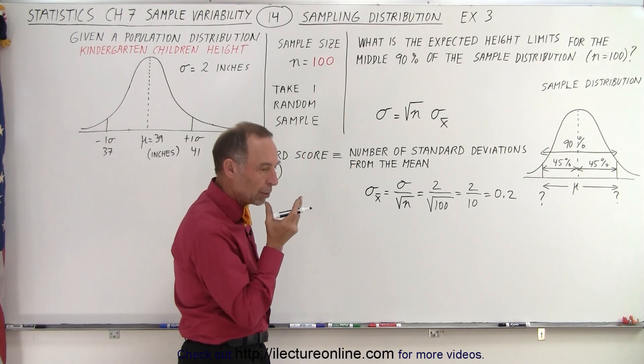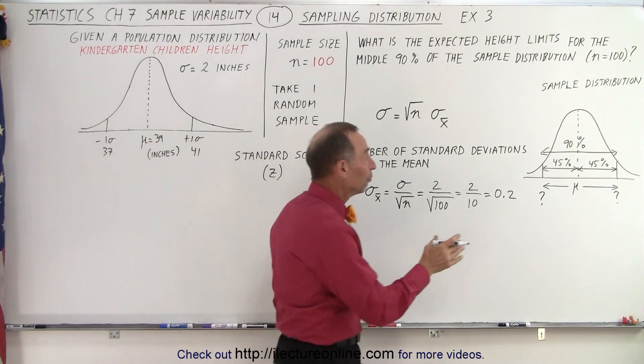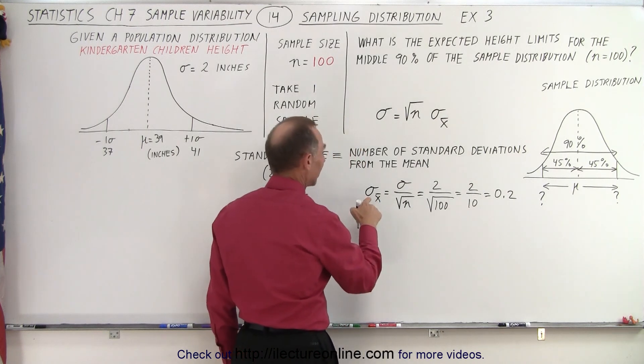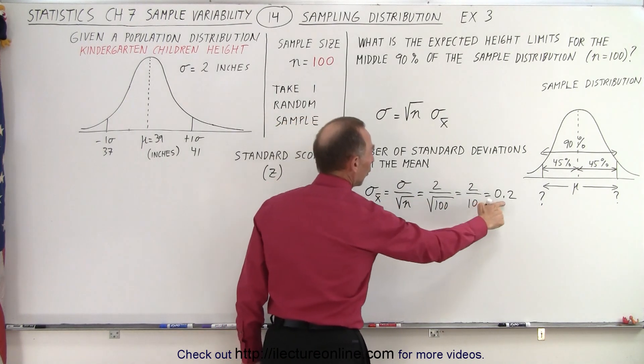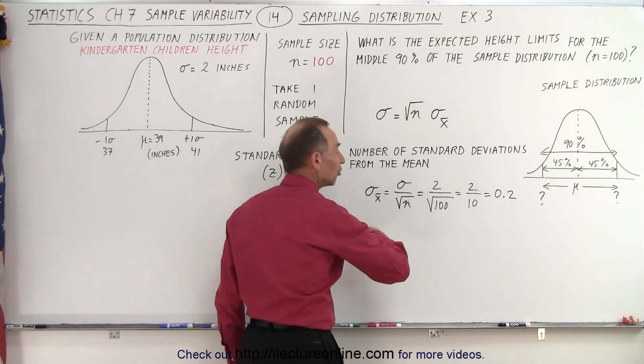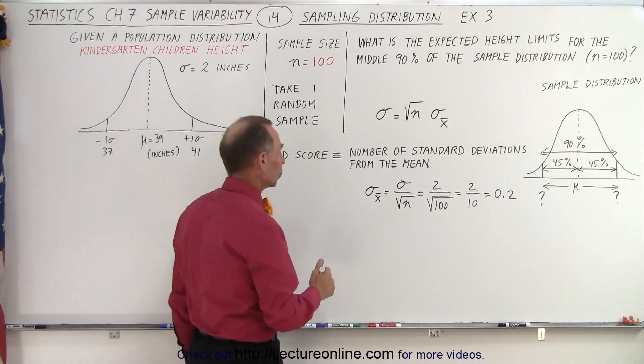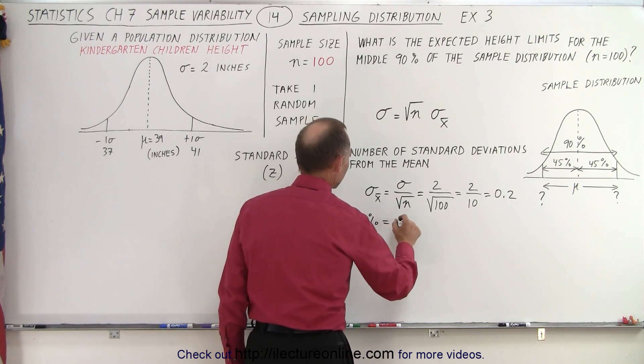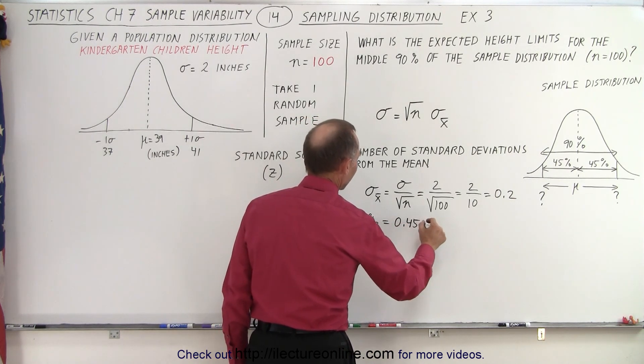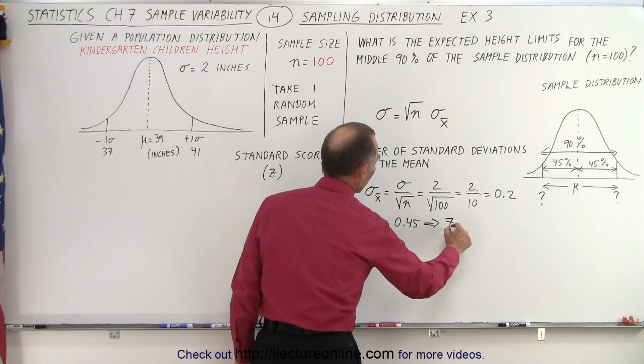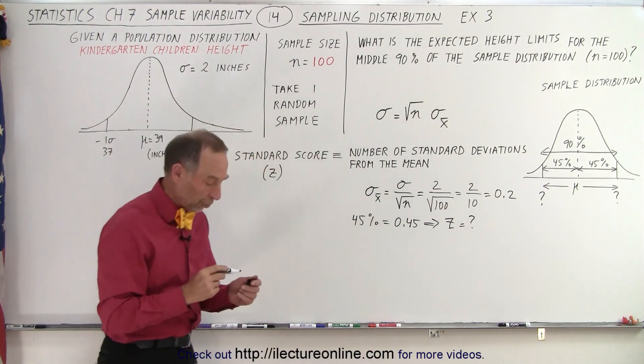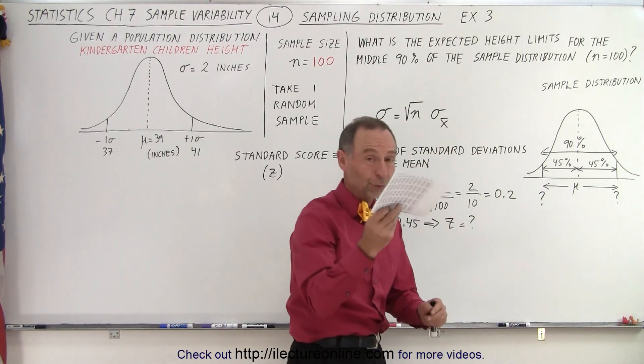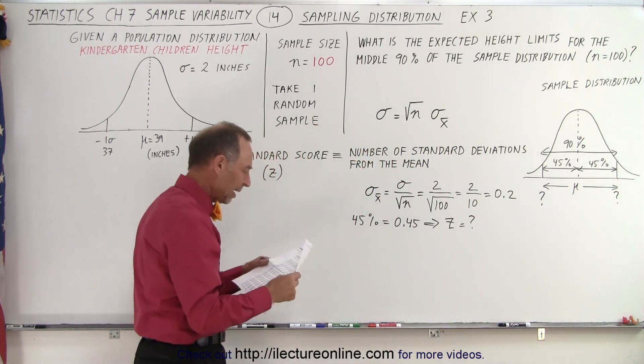So now we want to know what the z-score is for 45%. So with a standard deviation of 0.2 we want to know the z-score. Remember the z-score is the number of standard deviations. And so we want to take 45% which can be written as 0.45 and figure out then what the z-score is proportionate to that particular percentage underneath the graph. And of course we're going to need our table for that. And so we're looking for 45%, 0.45, and see what the equivalent z-score is for that.